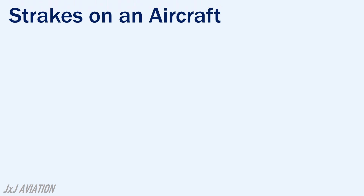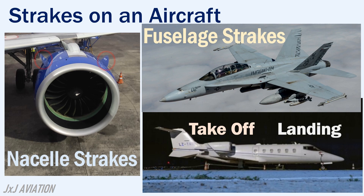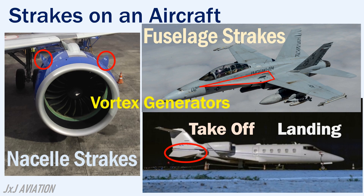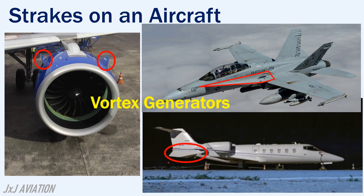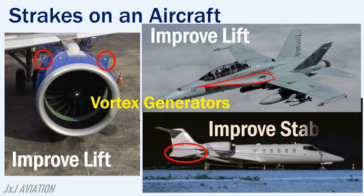So the nacelle strakes and the fuselage strakes are small surfaces which improve the airflow when the aircraft is flying at high angles of attack and at low speeds, such as during takeoff or landing. The function of strakes is similar to that of vortex generators, but they are bigger and thus create larger vortices across the wing or at the tail section. This is mainly to improve the lift generated on the wings or to improve the stability at the tail section of the aircraft.